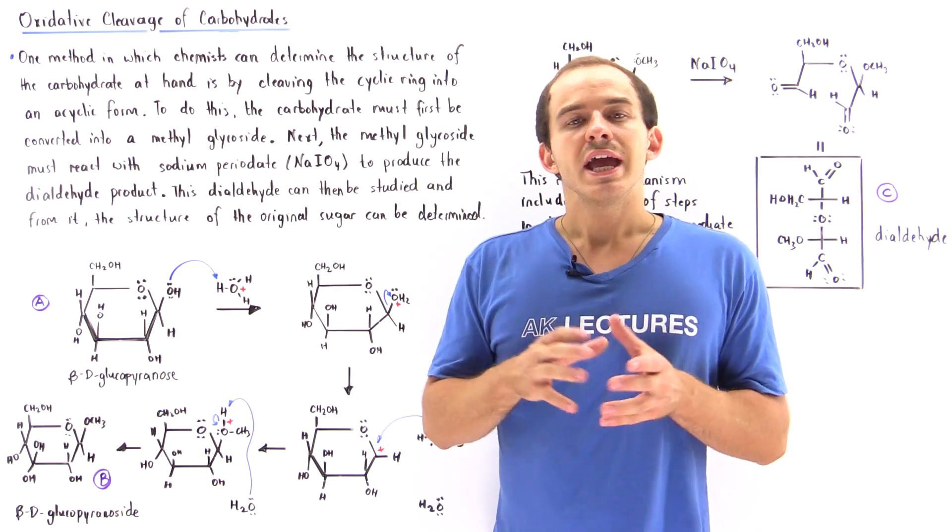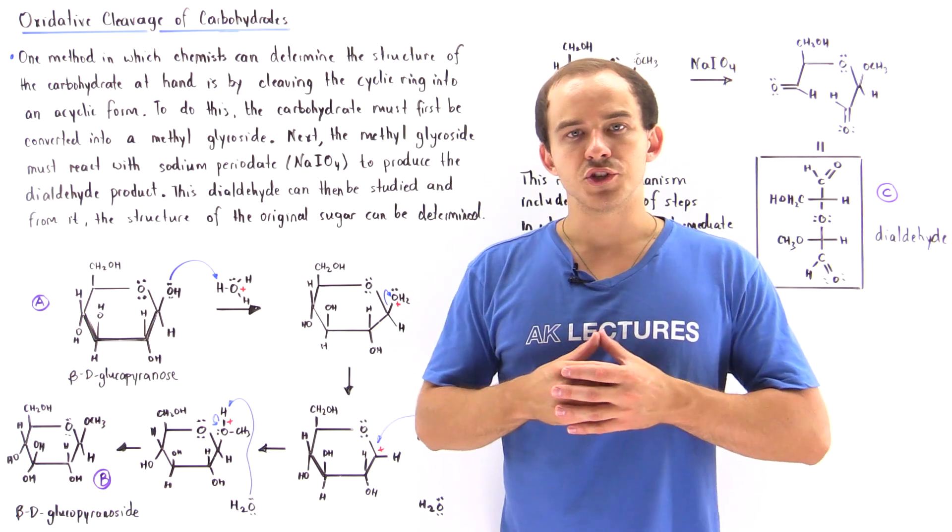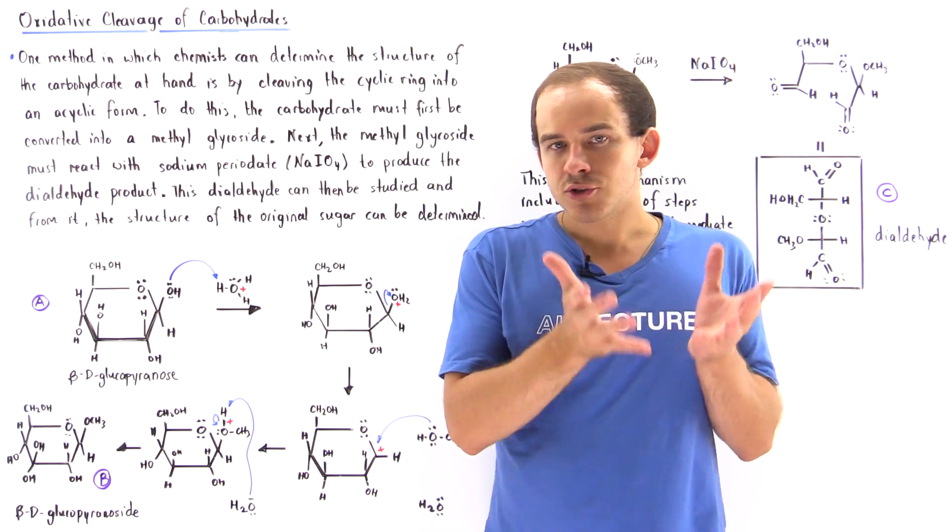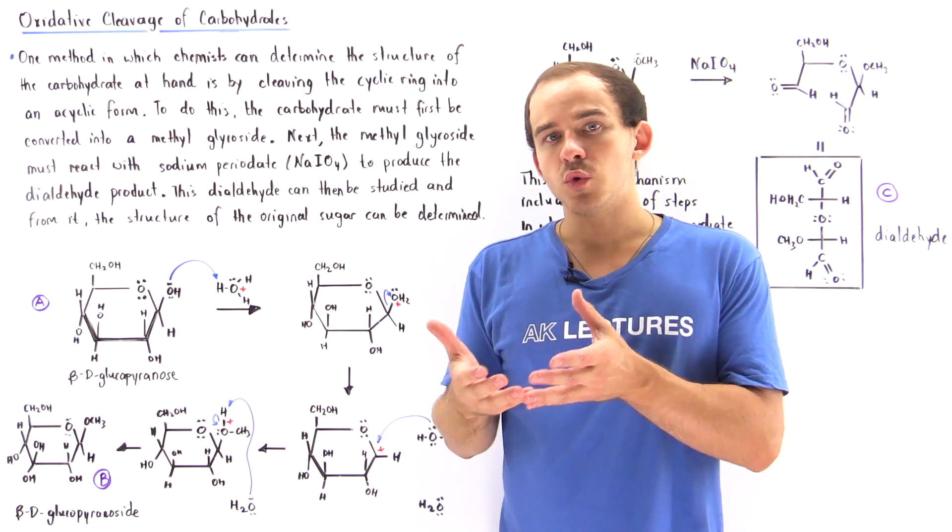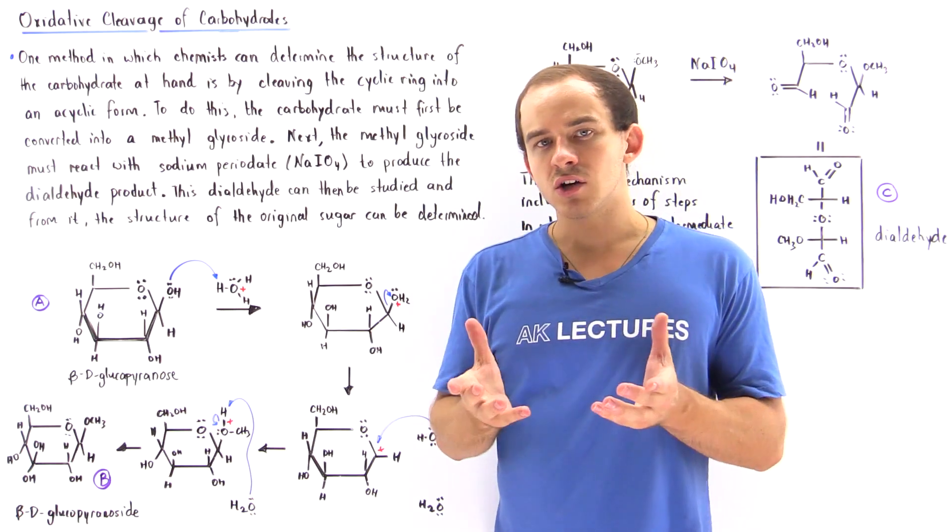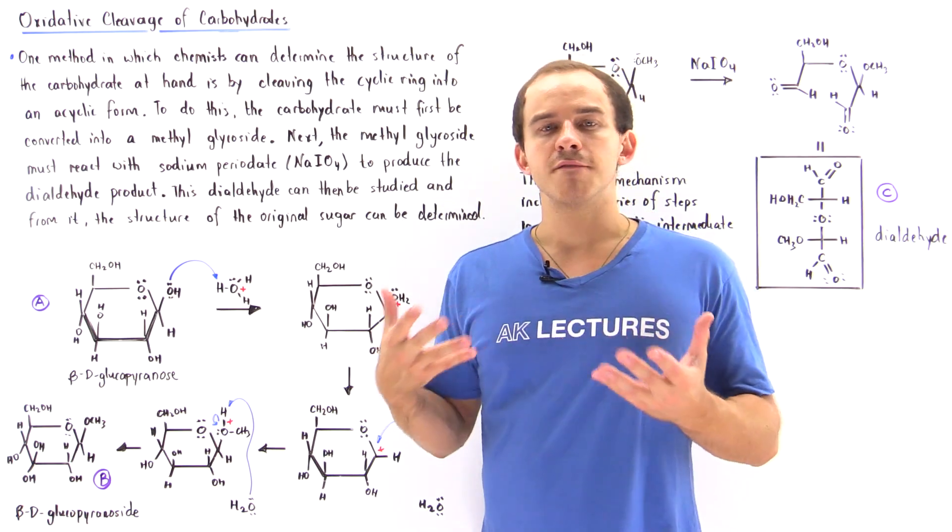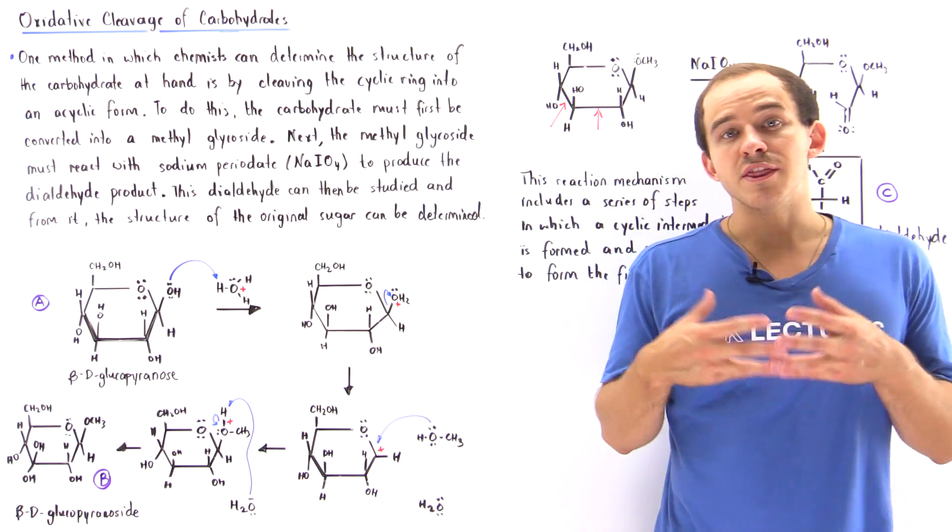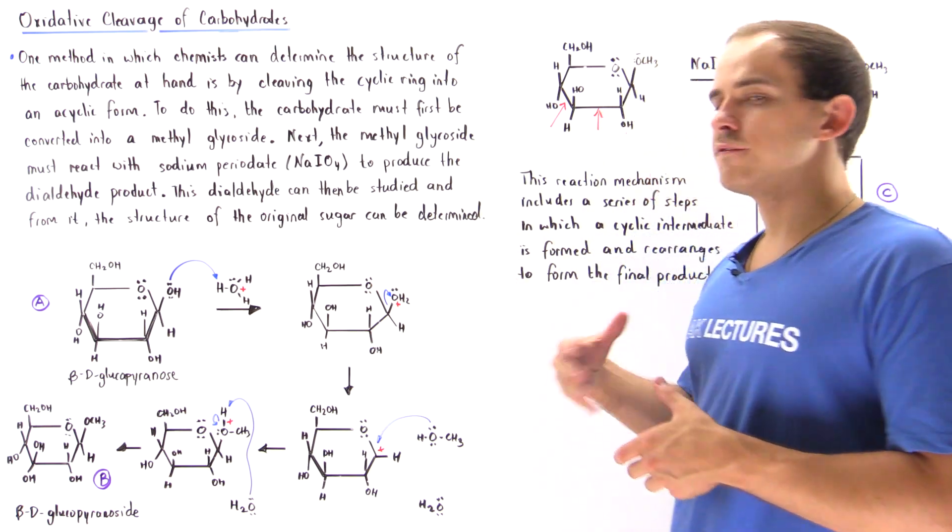So we basically take our sugar molecule, mix it with hydronium in the presence of alcohol to produce the methylglycoside version of that sugar molecule, and then mix it with sodium periodate to basically produce the final product.